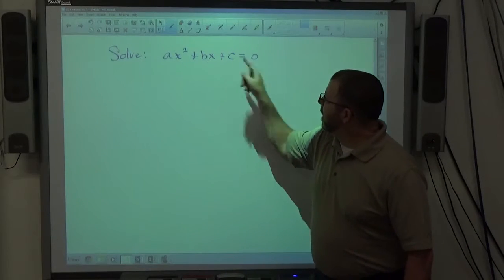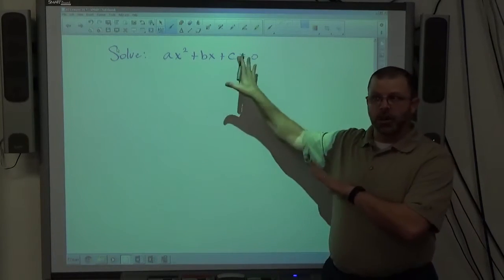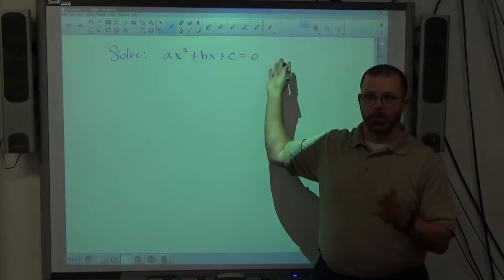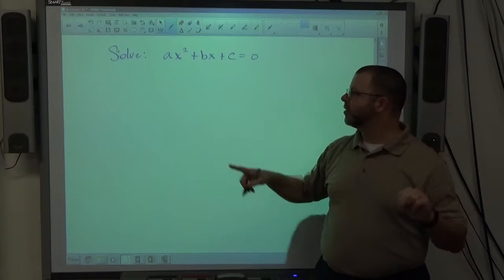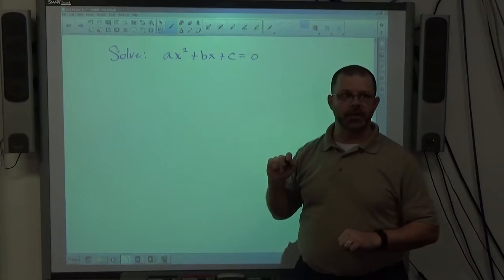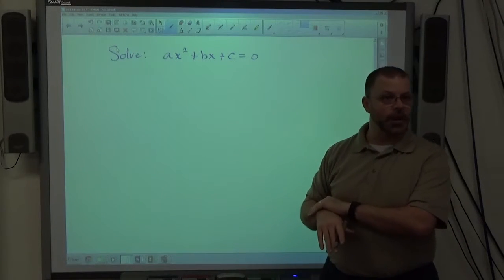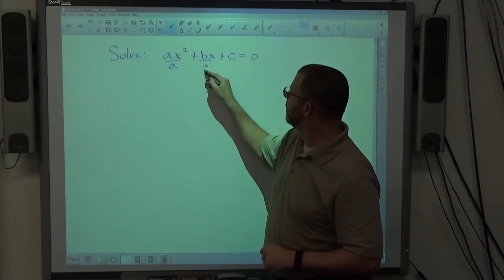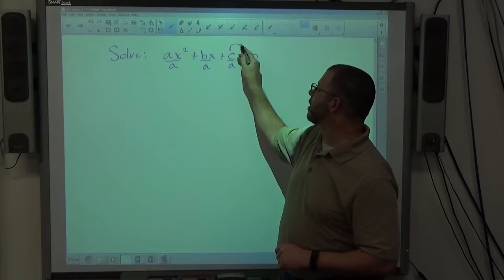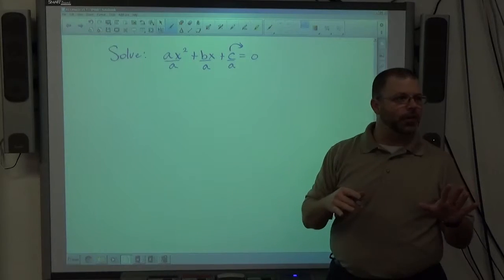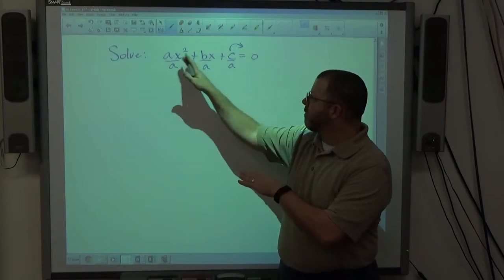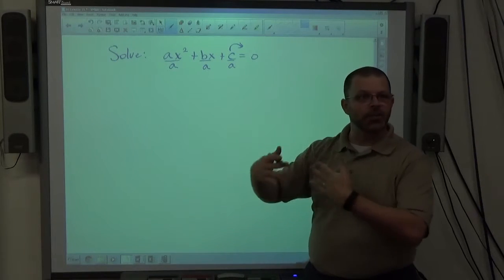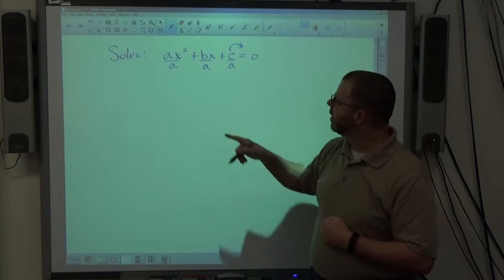ax squared plus bx plus c equals zero. If I'm completing the square on a structure of that type, the first priority is everything equals zero. And we're there. Second priority is I want one x squared instead of ax squared. I don't want some number in front of x squared. So I'm going to divide everything by a. And I also want to move my constant to the other side.